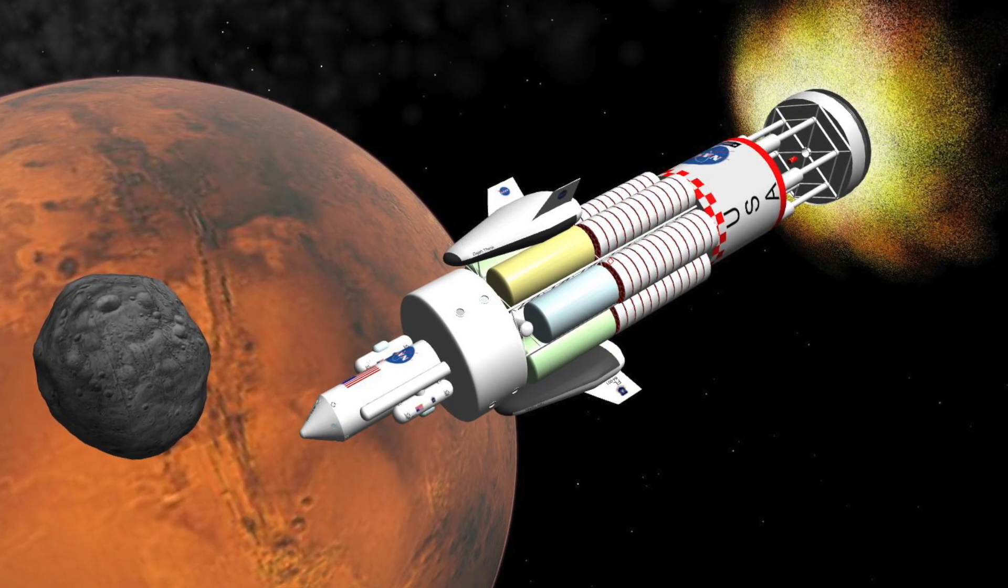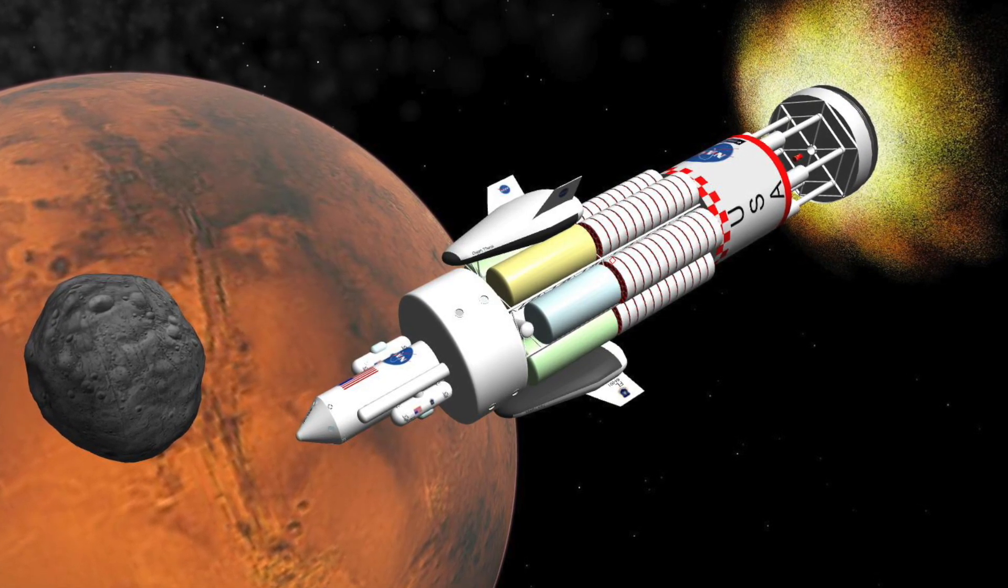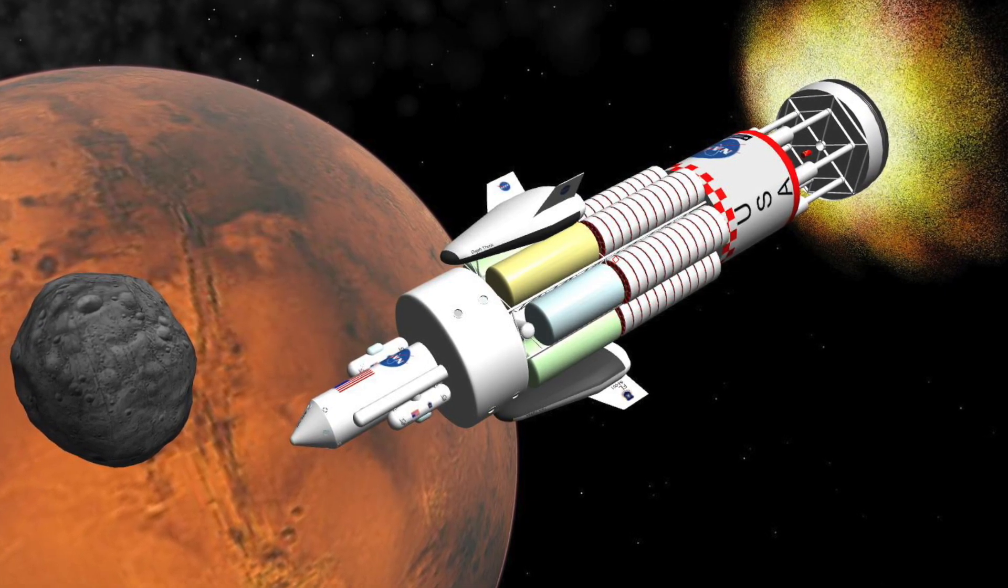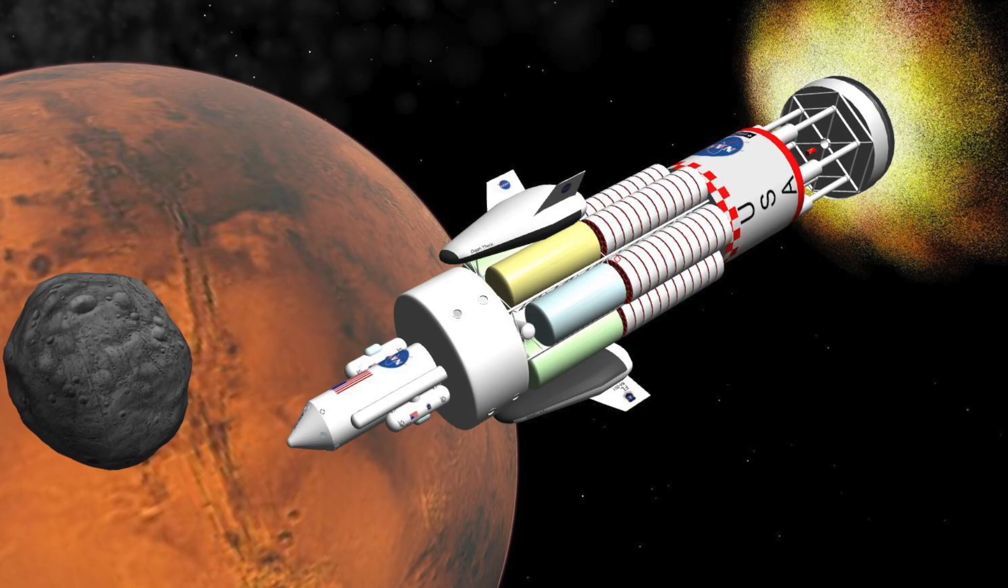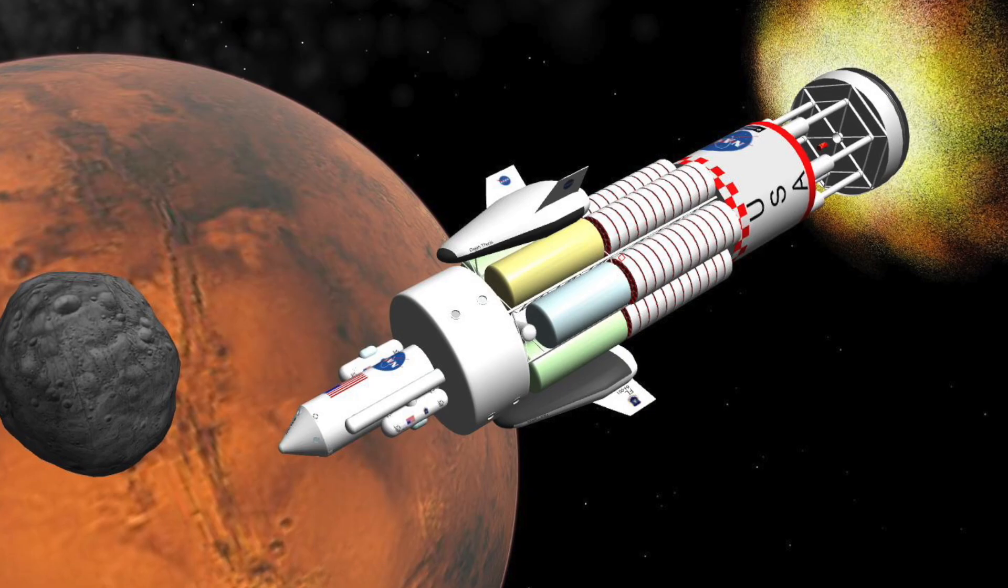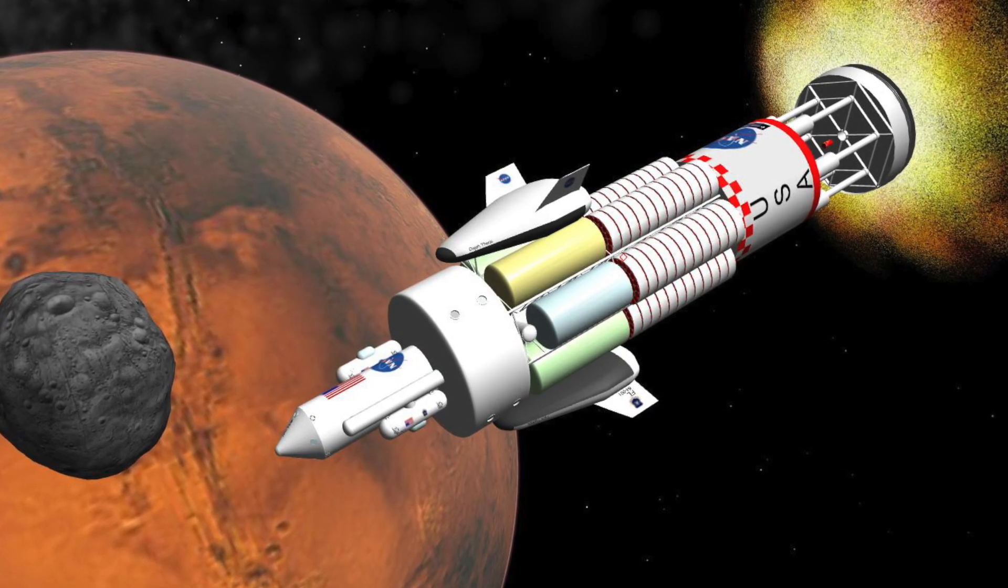While traditional rocket designs see thrust increase linearly with velocity, the kinetic energy of exhaust rises with velocity squared. Therefore, increasing both thrust and specific impulse demands substantial power. To maintain such power, Orion detonated nuclear explosions externally,